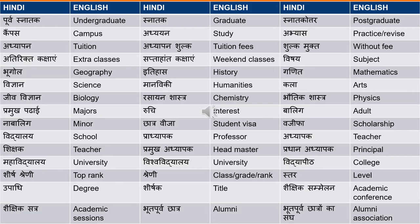'Atirikta kakshayen' — 'atirikta' is extra and 'kakshayen' is classes, so 'atirikta kakshayen' means extra classes. 'Saptant kakshayen' means weekend classes. 'Vishay' means subject. I have now listed the names of some common subjects: 'bhugol' is geography, 'itihas' is history, 'ganit' is mathematics, 'vigyan' is science, 'manviki' is humanities — arts and humanities courses in universities can be translated as 'manviki'. 'Kala' is arts, 'jeev vigyan' is biology, 'rasayan shastra' is chemistry, 'bhautik shastra' is physics. 'Pramukh padai' refers to majors — for example, 'meri pramukh padai music thi' means my major was music.